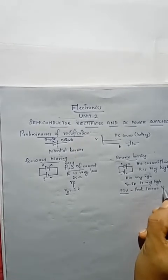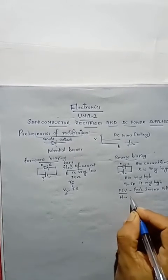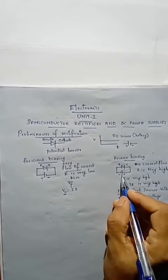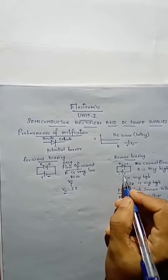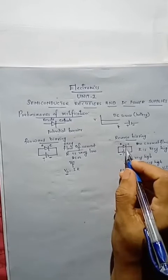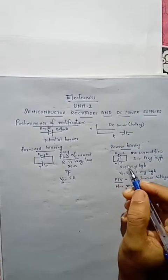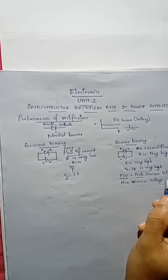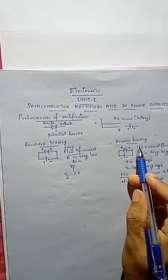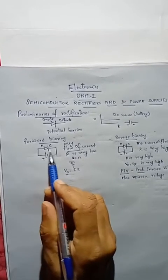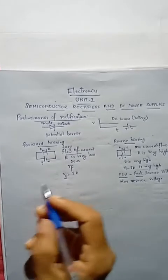PIV is the maximum reverse voltage that a diode can withstand. In the reverse biased case, whatever voltage is applied will appear across the diode, so we must know the Peak Inverse Voltage of the diode to avoid breakdown and damage. In forward biasing, the diode acts just as a conductor with very low resistance and easy current flow.